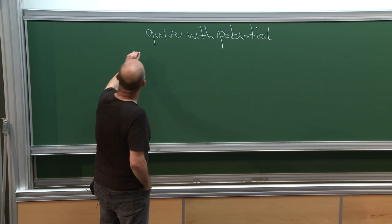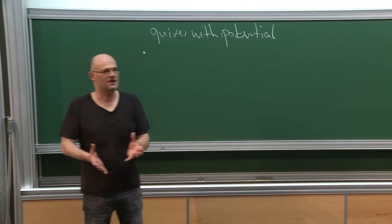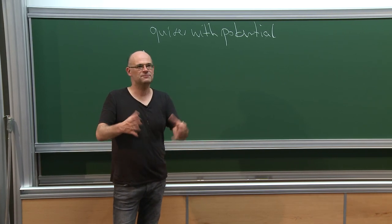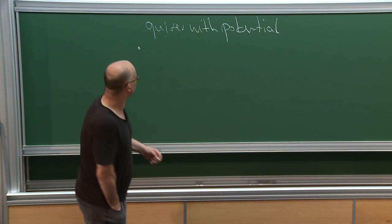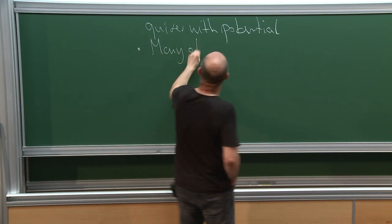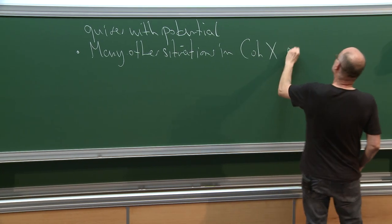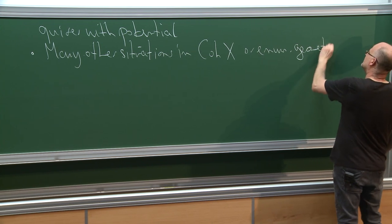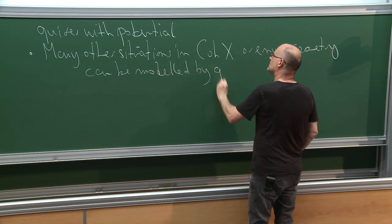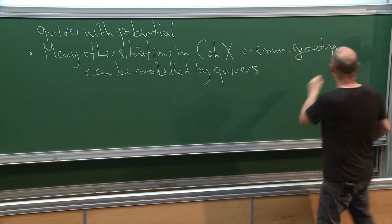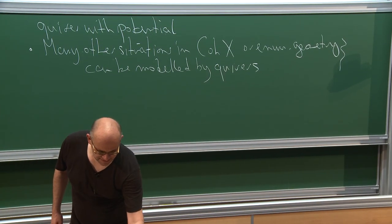Another reason for studying curves is that if you are interested in some category of sheaves but only in local phenomena — sheaves filtered by a finite number of basic objects — then if you are lucky you can model everything by a quiver situation. Many other situations in categories of coherent sheaves or in enumerative geometry can be modeled by quivers.